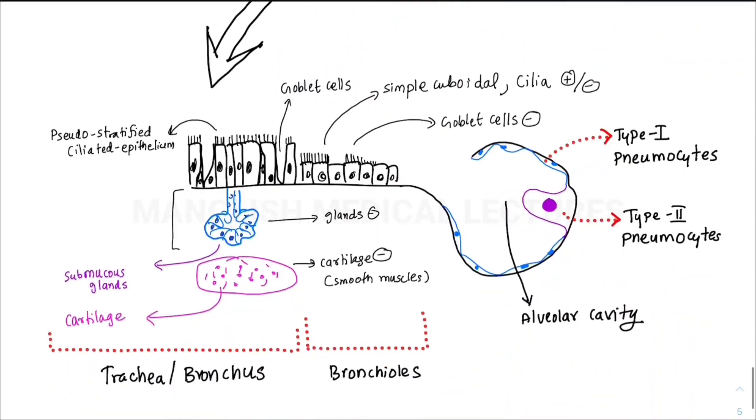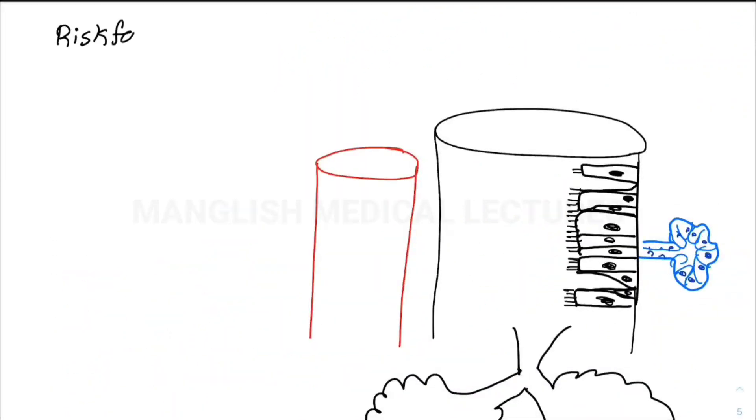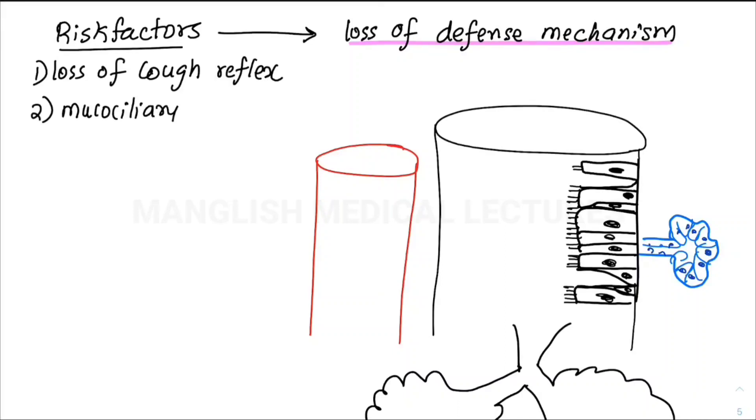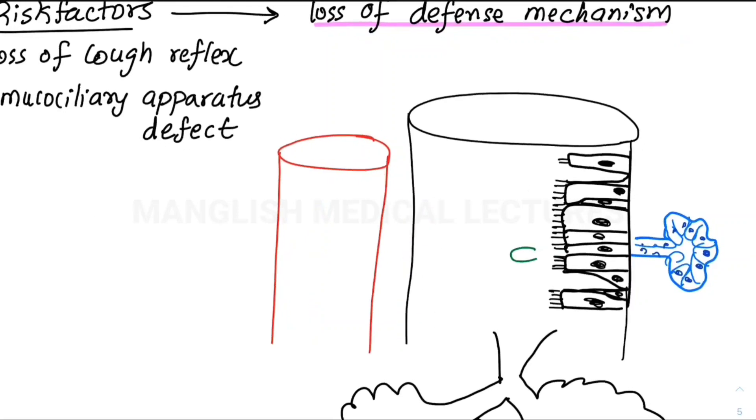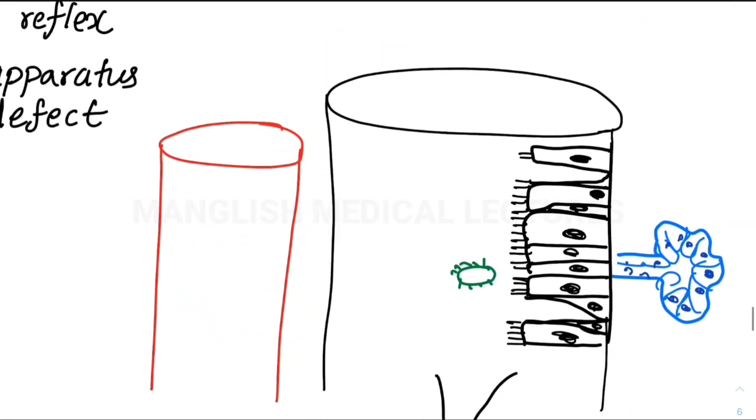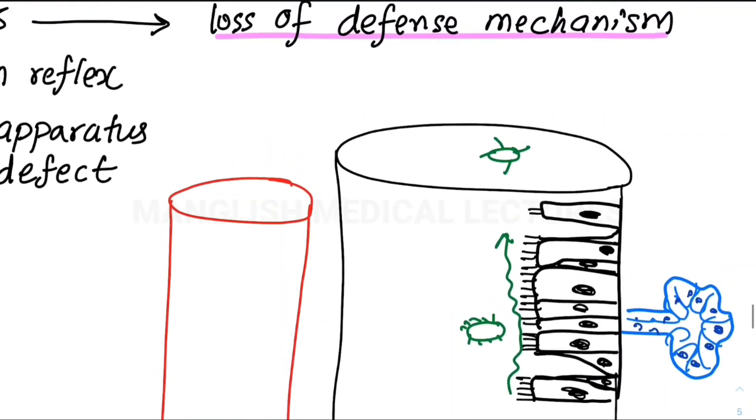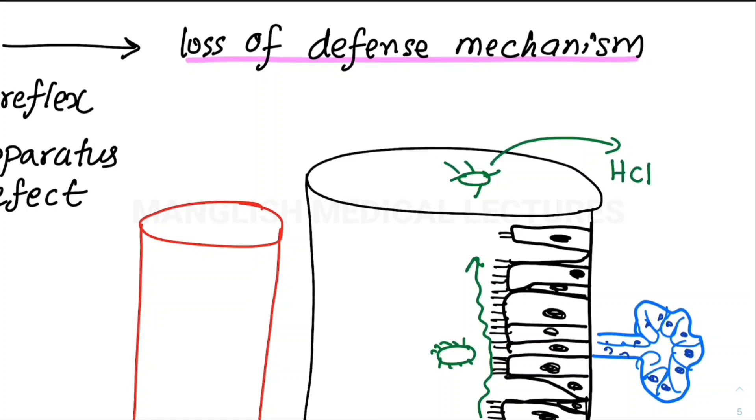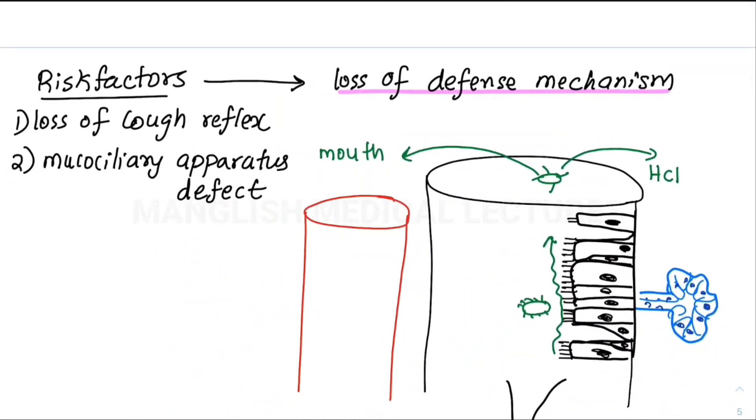Now we move to the risk factors which can trigger pneumonia. Important ones are loss of local defense mechanisms—loss of cough reflex and dysfunction of the mucus ciliary apparatus. In the respiratory epithelium, the cilia push the antigen or bacteria up to the throat, so you can either ingest it—goes to the stomach where HCL destroys it—or spit it out.